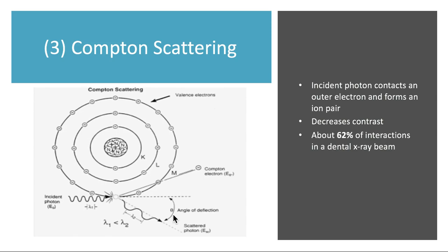If your kVp is too high, you'll get more Compton scattering, and you'll have a darker image with decreased contrast. Compton scattering involves photons not going in their intended primary beam direction — they're getting bounced off in a different direction, decreasing contrast. This accounts for about 62% of photon interactions in a dental x-ray beam, making it the majority. Note that both coherent and Compton scattering cause photons to travel in different directions, causing overall darkening and loss of image contrast.